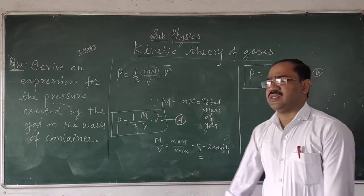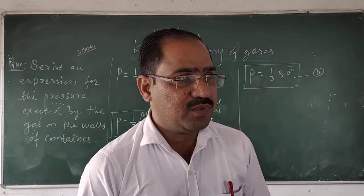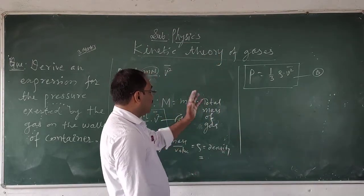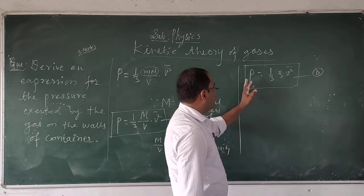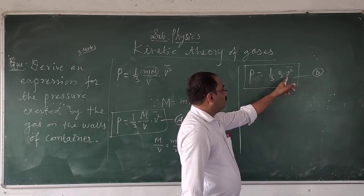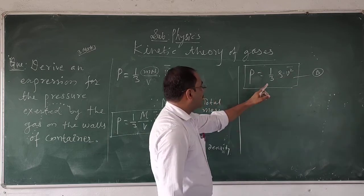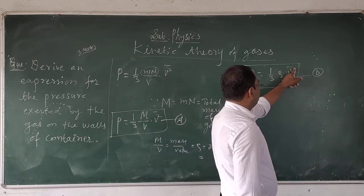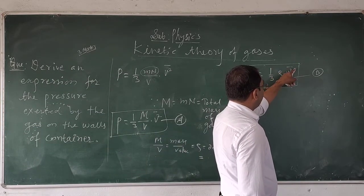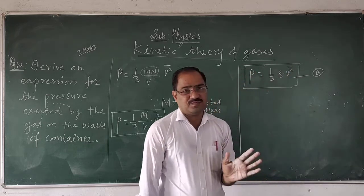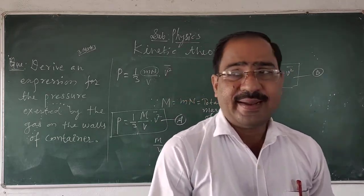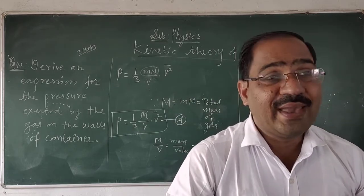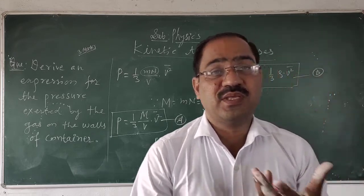These are the pressure expressions exerted by the gas on the walls of the container, while the gas is enclosed inside the cubical box. It will be imparting pressure: P equals one-third rho into V squared mean. Here rho is the density, that is the mass upon volume of the gas. V squared mean — the mean square velocity — is the average of the squares of the velocities of all the particles of the gas enclosed inside the box.